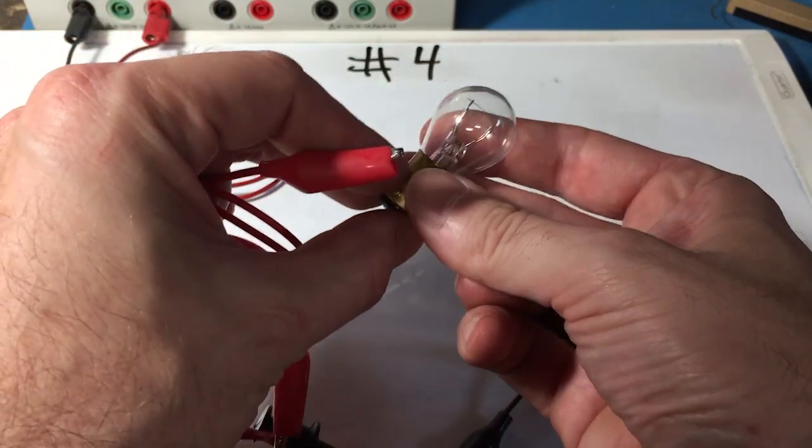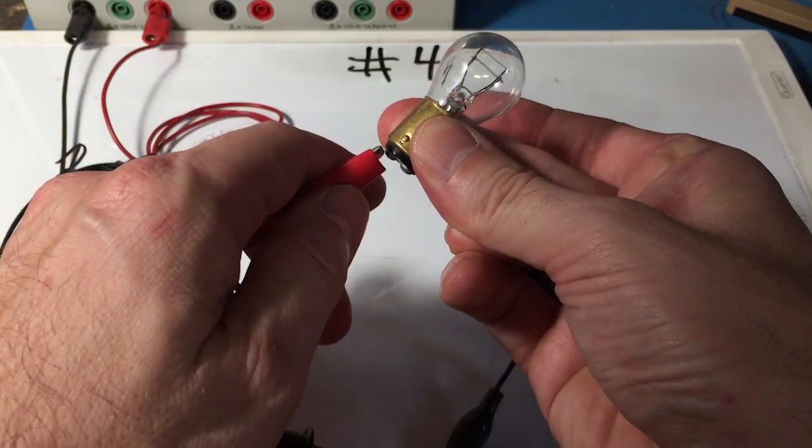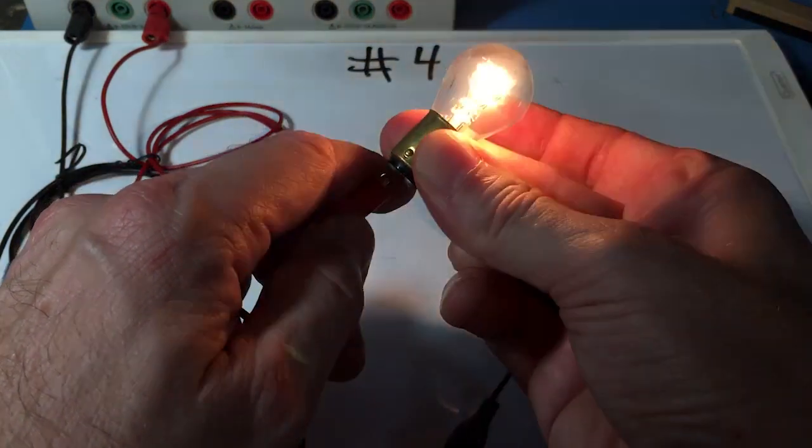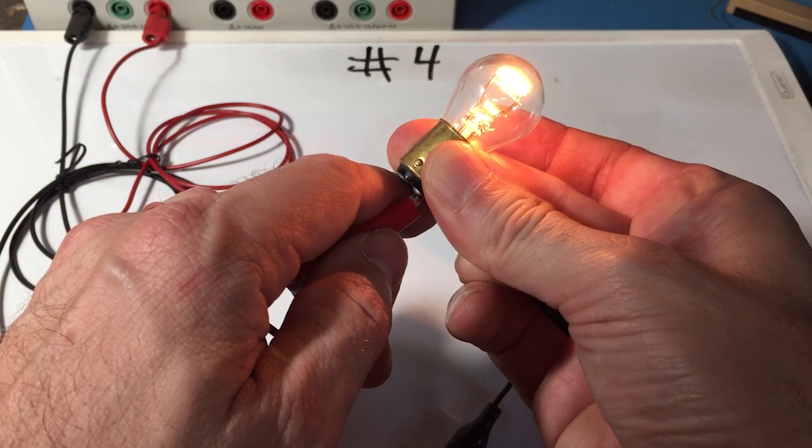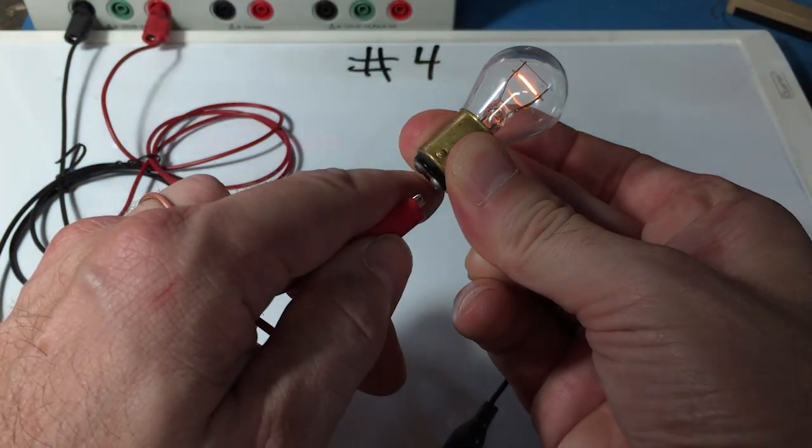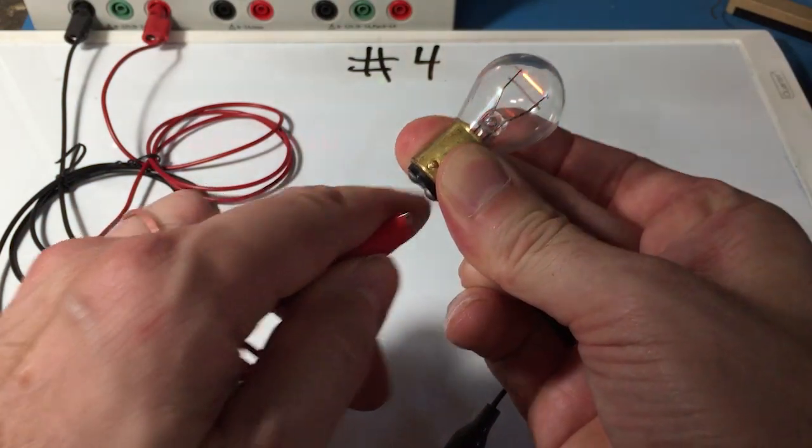Once again, the outside is the ground. You can see that is one of the filaments and then the other filament. Can you guess which one is the brake light? First one or second one.